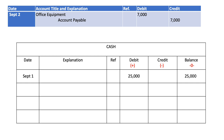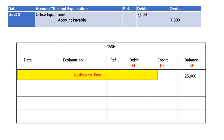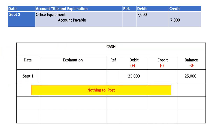The second journal entry is debit office equipment, credit accounts payable. Since I'm posting to cash, I'm only interested in cash. This journal entry does not have cash in either the debit or credit side, so I disregard it — there is nothing to post for cash.